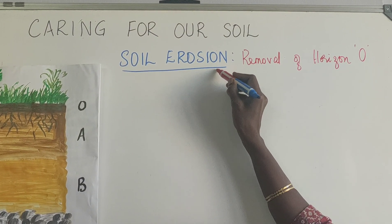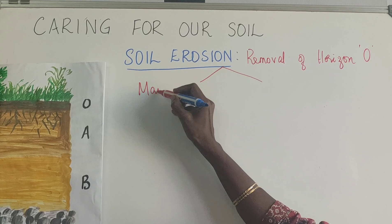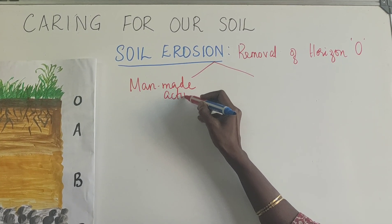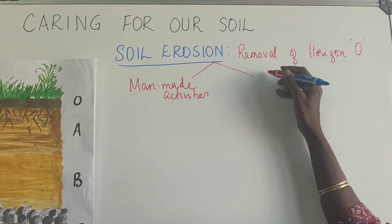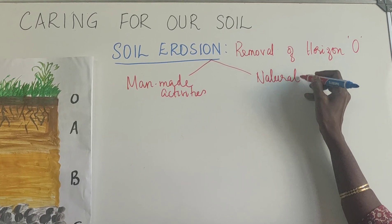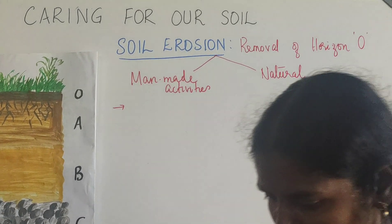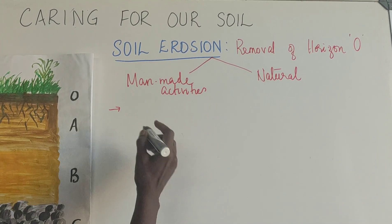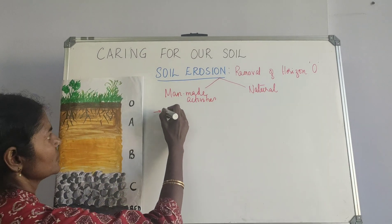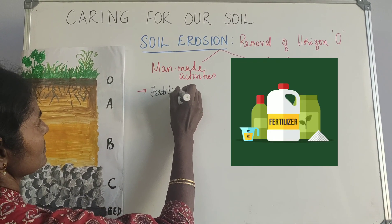This can happen in two ways: one is man-made activities, and the other one is natural. Now let's look into some of the man-made activities. The first one to mention is that sometimes they add a lot of fertilizers and pesticides.